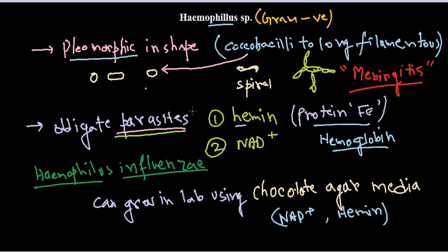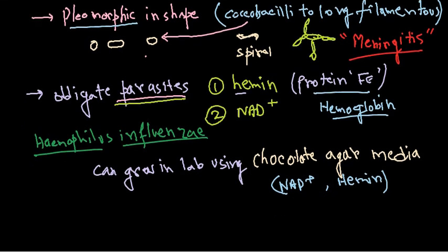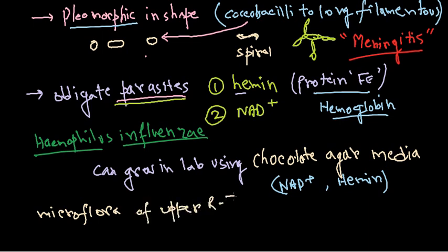One important thing: Haemophilus influenzae is a normal component of our upper respiratory tract — it is a normal microflora. It can be transferred via respiratory tract infections and via air as micro-droplets from one person to another.